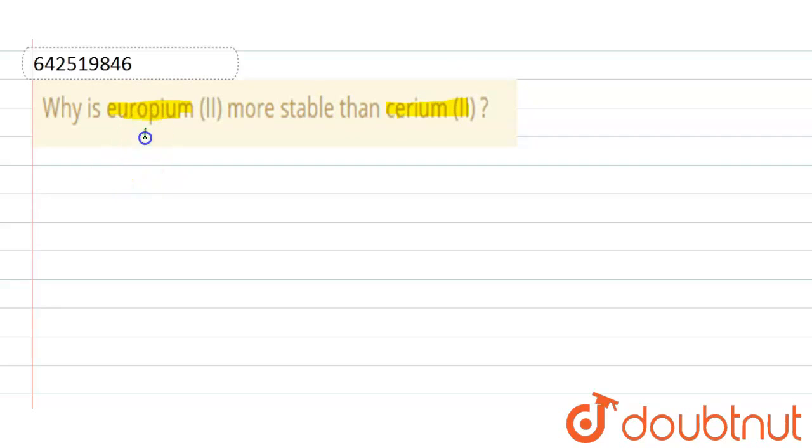Here is the solution. The electronic configuration of europium in plus 2 state is xenon 4f7 5d0.